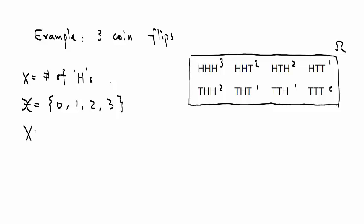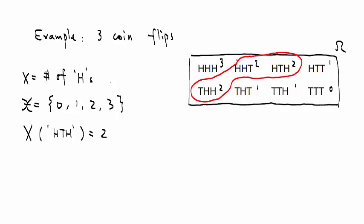We can write X of a particular outcome — let's say X of HTH — is equal to 2. This 2 is a value of small x we can have. At this point, you can see that when we label the random variables, we actually define a set of outcomes.